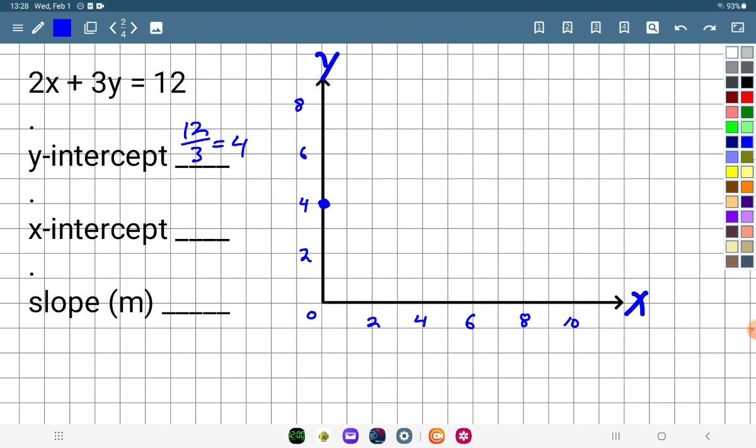To get the x-intercept, we pretty much do the same kind of thing. We imply that y equals 0. So 3 times 0 is 0. So this part will be temporarily gone. And that leaves 2x equals 12. Well, if I divide both sides by 2, then I'm going to have 1x equals 6.